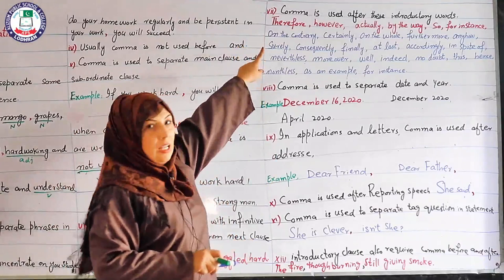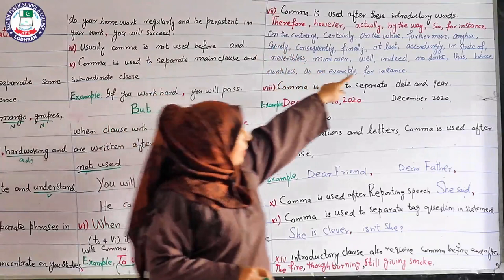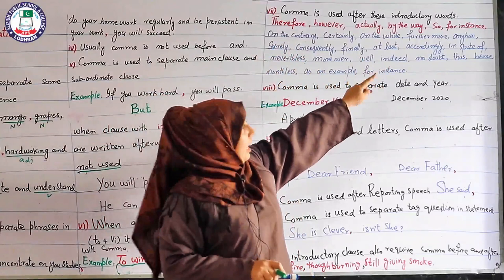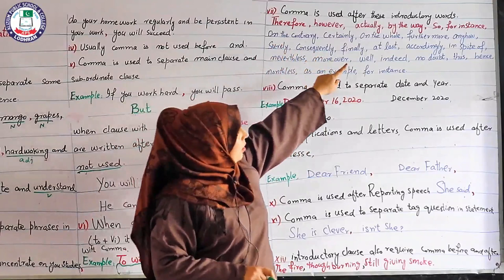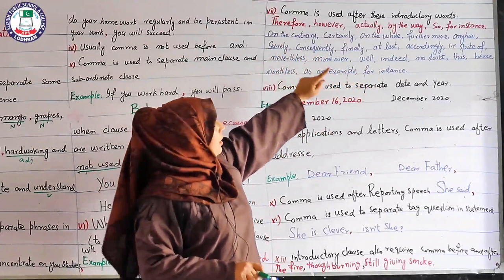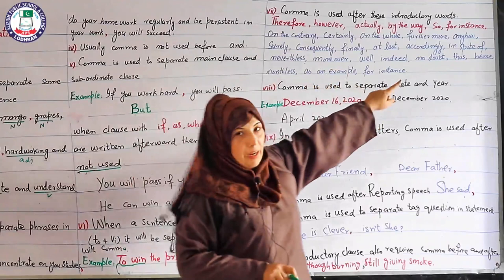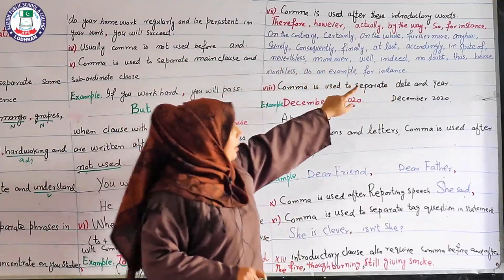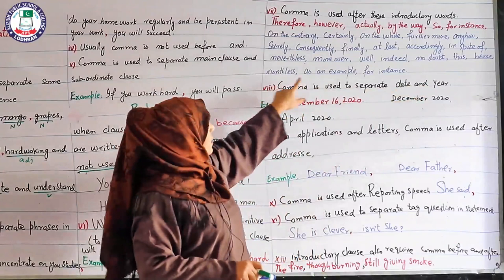The introductory words requiring a comma are: therefore, however, actually, by the way, so, for instance, on the contrary, certainly, on the whole, furthermore, anyhow, surely, consequently, finally, at last, accordingly, in spite of, no worthless, moreover, well, indeed, no doubt, thus, hence, nonetheless, as an example, for instance.